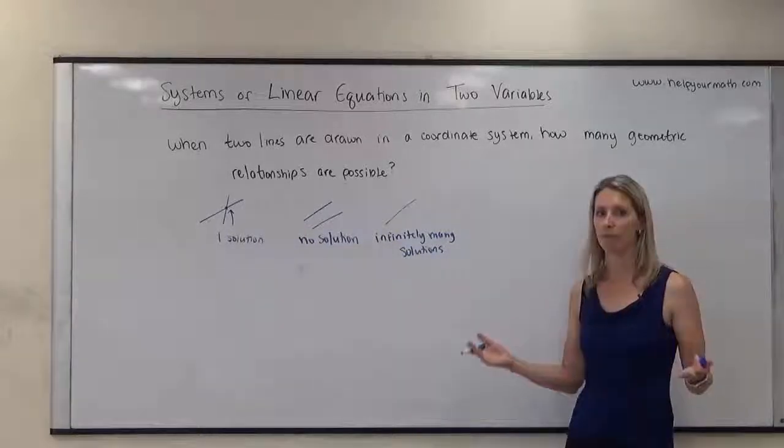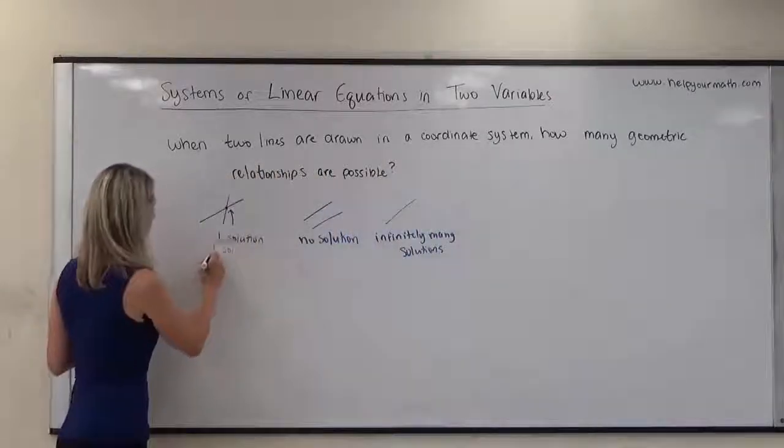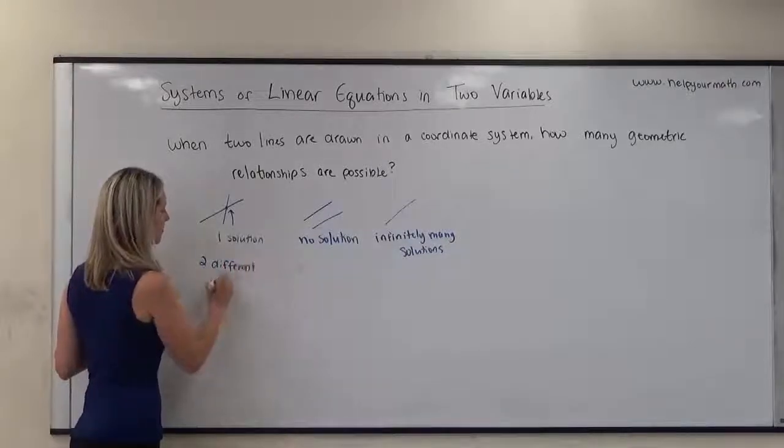That's how we know there's going to be one solution—we have two different slopes. The two equations each have their own slope and it's not the same: two different slopes.